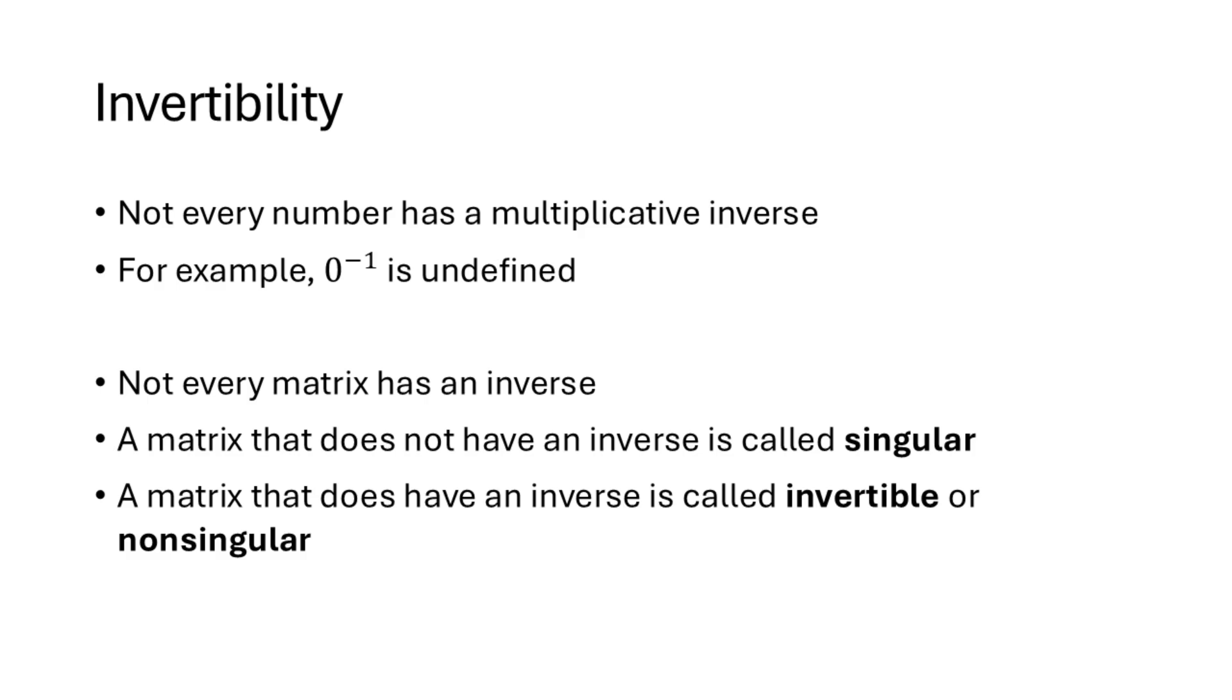Similarly, not every matrix has an inverse. As we'll see, there are a lot of non-invertible matrices, and we call such a matrix that doesn't have an inverse a singular matrix. A matrix that does have an inverse is called invertible or non-singular. So a given square matrix is either invertible or singular.